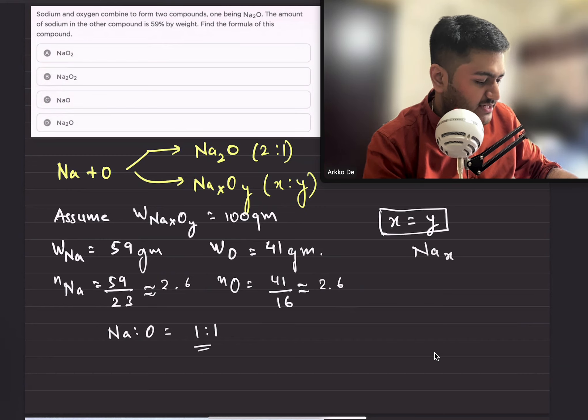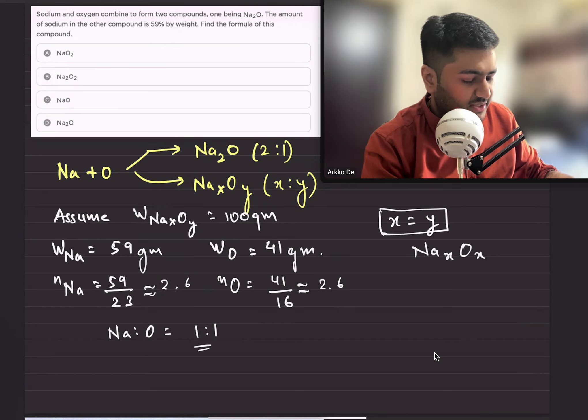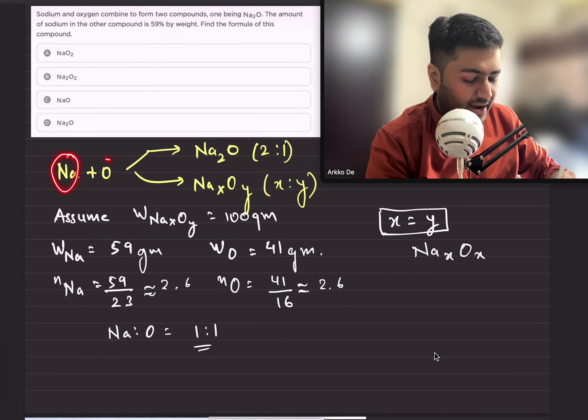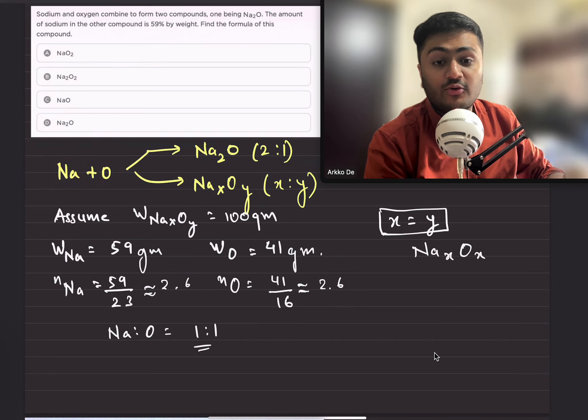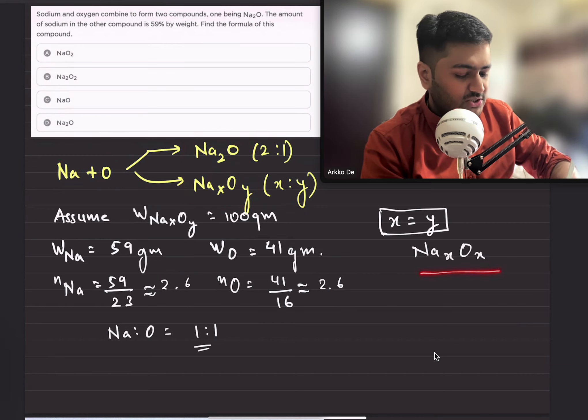This is based on the law of multiple proportions. When two elements combine to form two or more compounds, in this case sodium and oxygen combine to form Na2O and Na_x O_x. In the first compound, sodium